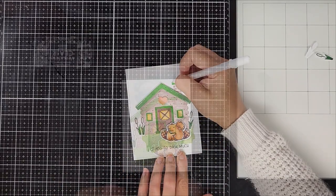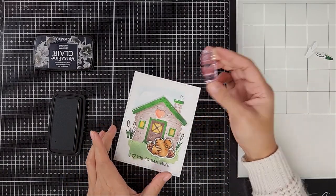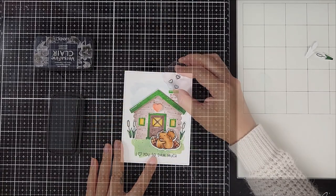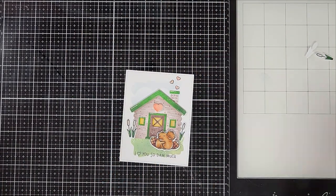Also, there's a little heart stamp that's in the stamp set. I decided to stamp a few hearts on top of the cabin and I went in and colored that with pink Copic markers.